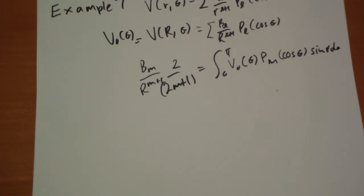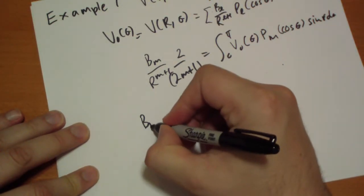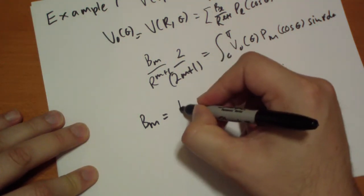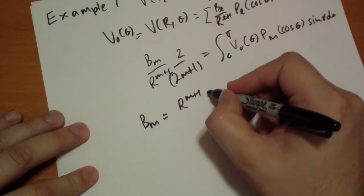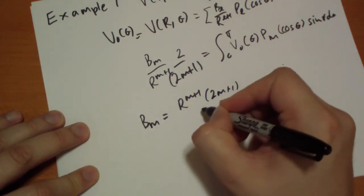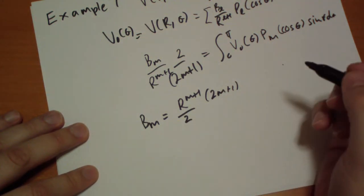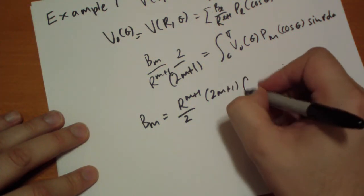Or we can rewrite this if we just want to calculate for B_M. So B_M is equal to R to the M plus 1 on the top, 2M plus 1, and there's a 2 on the bottom, and the same integral.